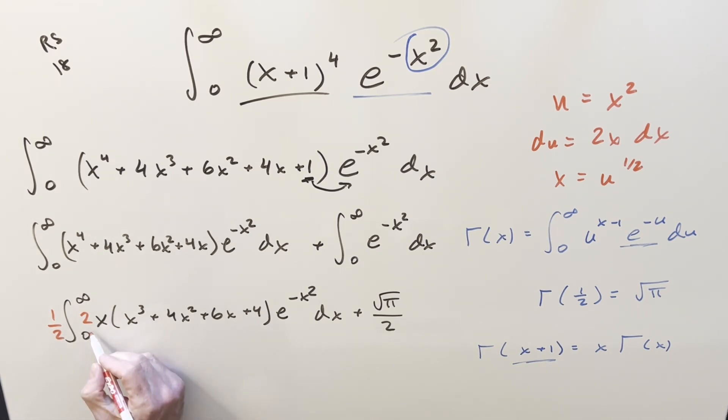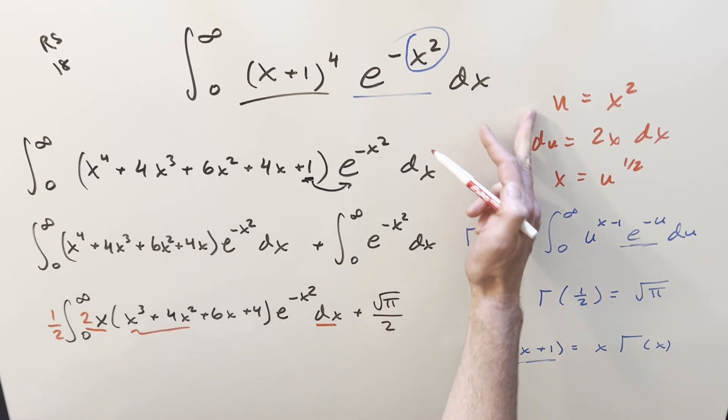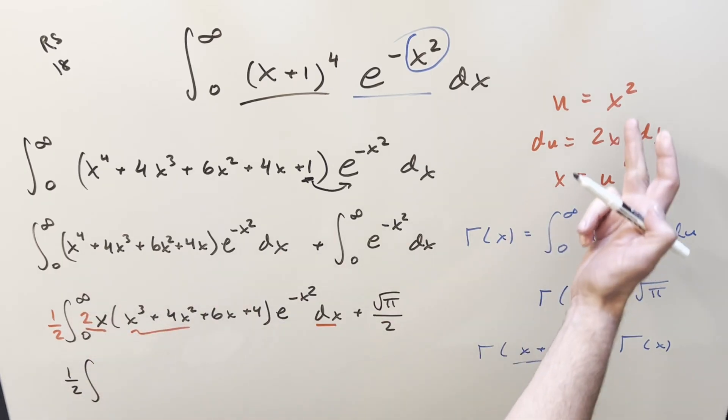Then that way, what we're going to have, this will become, this is going to be our du value. And then we're going to be able to reduce all this with our value for x. So let's see what happens. We're going to have 1/2. Now when we do the bounds, it's still going to be going from 0 to infinity.